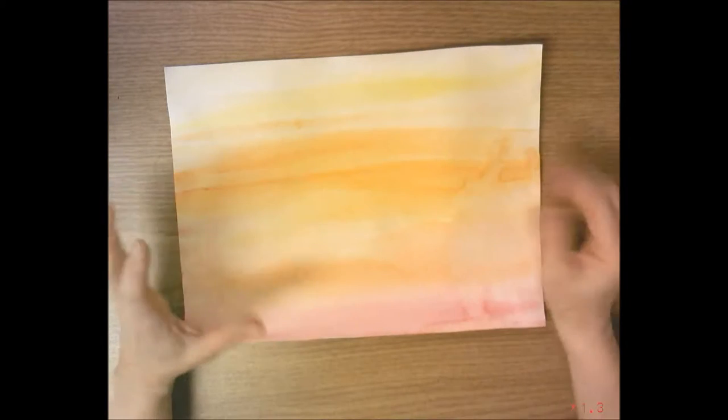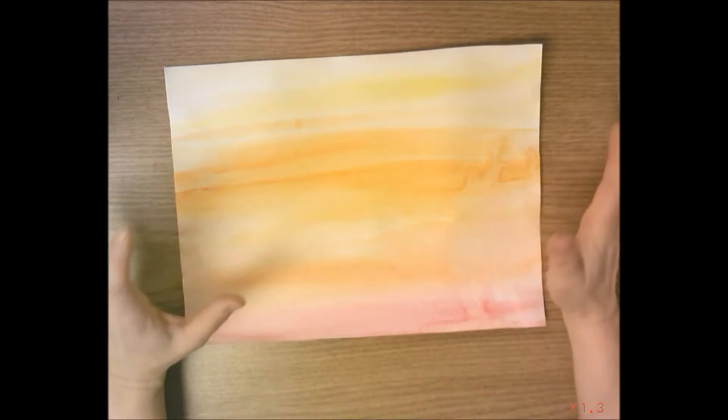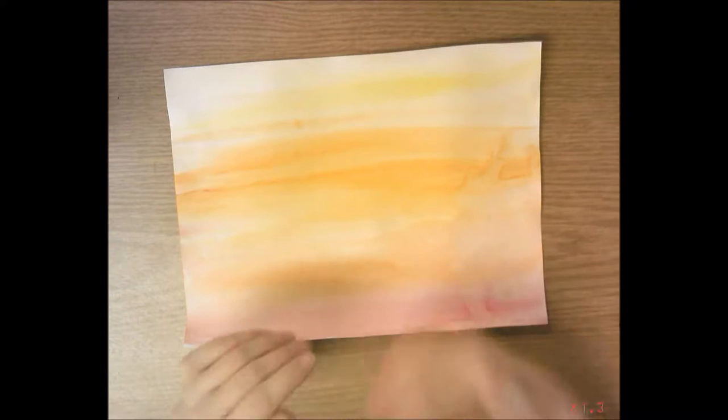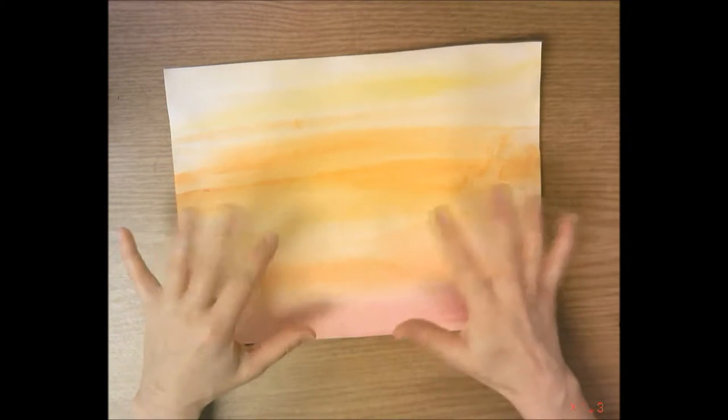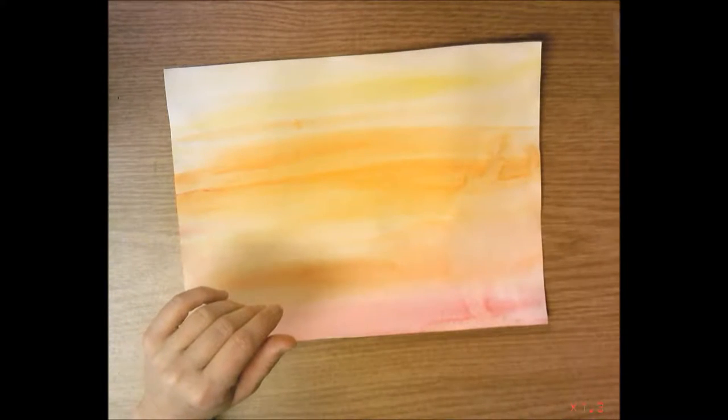Okay, first grade. On day two, after your sunrise or sunset watercolor wash is dry, we're going to add a scene in front of it. It's called a silhouette scene because you don't see the inside details—you only see the outline. It's almost like a shadow.